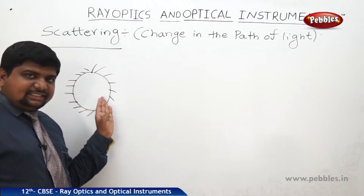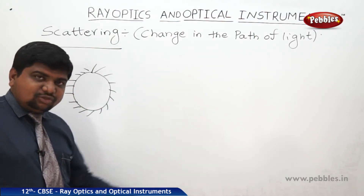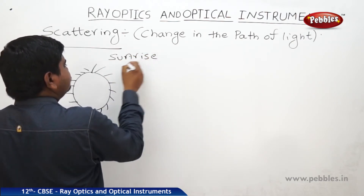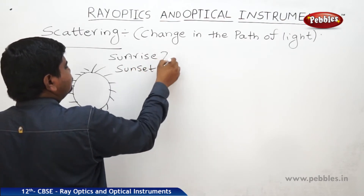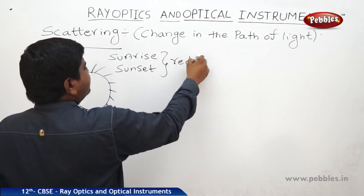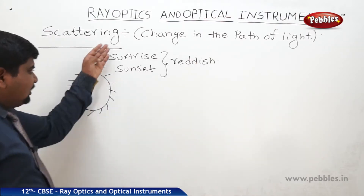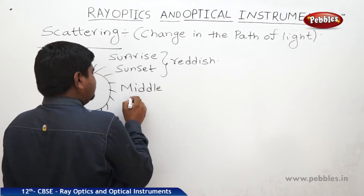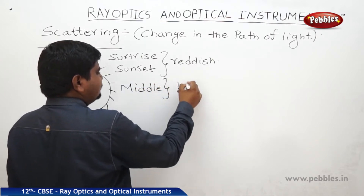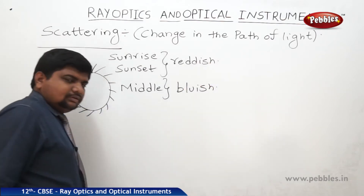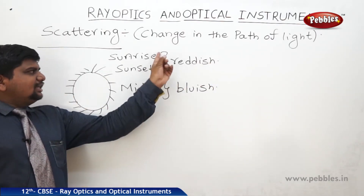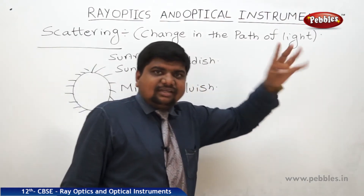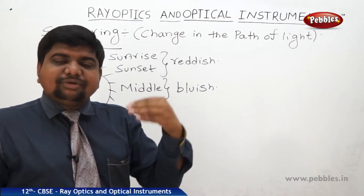At the time of sunset and sunrise, the sky appears to be reddish. In the middle of the day — between sunrise and sunset — the sky appears bluish. Whenever sunrise and sunset occur, only red color appears; all the remaining six colors are not visible because they are removed by scattering.